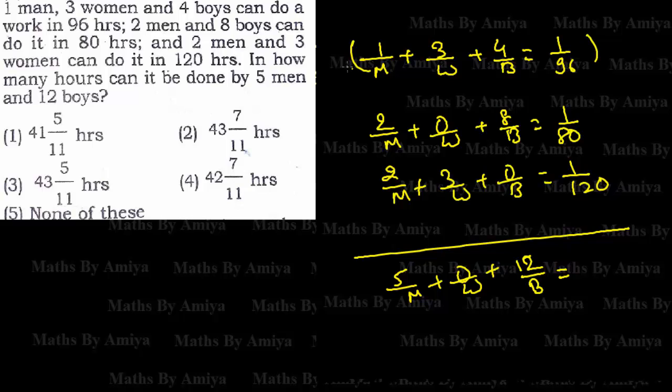Say, this equation is multiplied by x. This equation is multiplied by y. This equation is multiplied by z. So by adding x plus y plus z, we have to get this value. So we can say, the first one is x plus 2y plus 2z is nothing but 5. I am just equating the man part. This is my first equation.